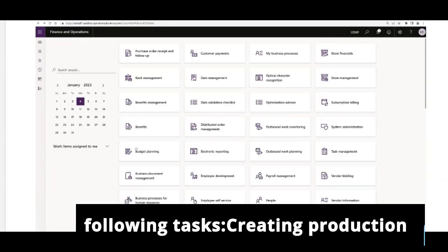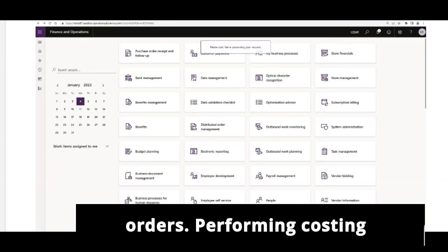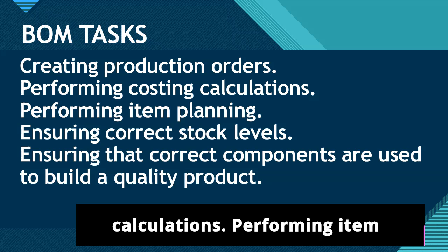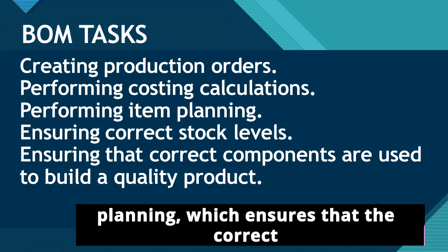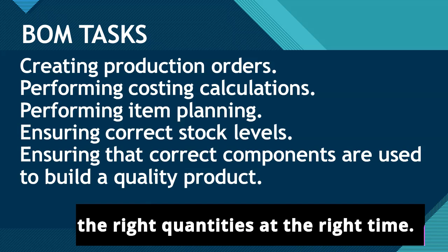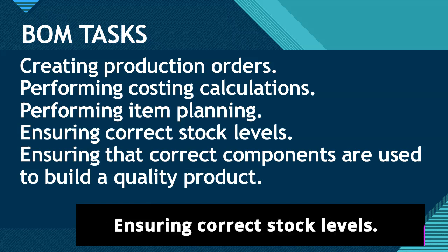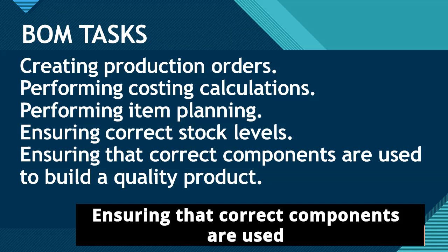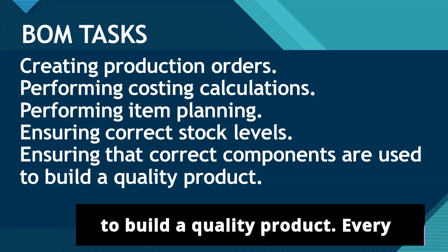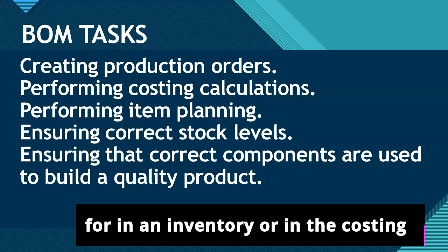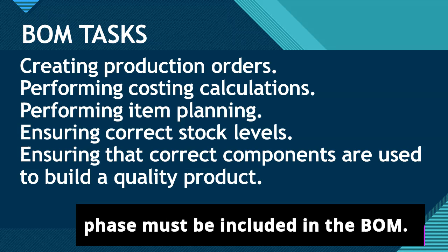A clear definition of this relationship is important for the following tasks: creating production orders, performing costing calculations, performing item planning — which ensures that the correct products are purchased and produced in the right quantities at the right time — ensuring correct stock levels, and ensuring that correct components are used to build a quality product. Every item that must be financially accounted for in an inventory or in the costing phase must be included in the BOM.